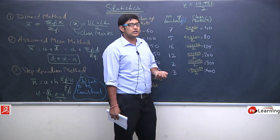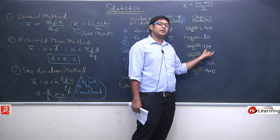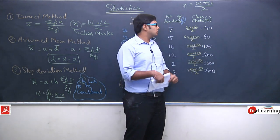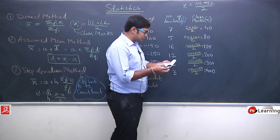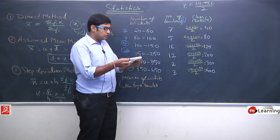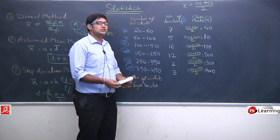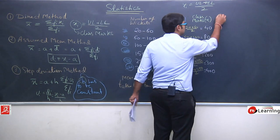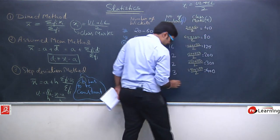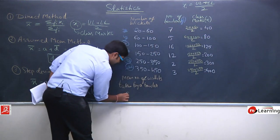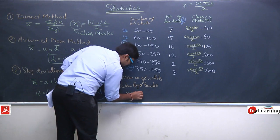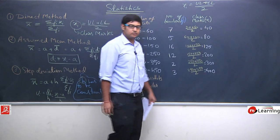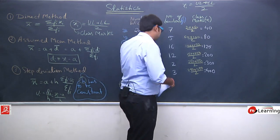Let us take the middle value 200 as our assumed mean. So assumed mean a is 200. Now I can calculate d_i, which is x_i minus a.